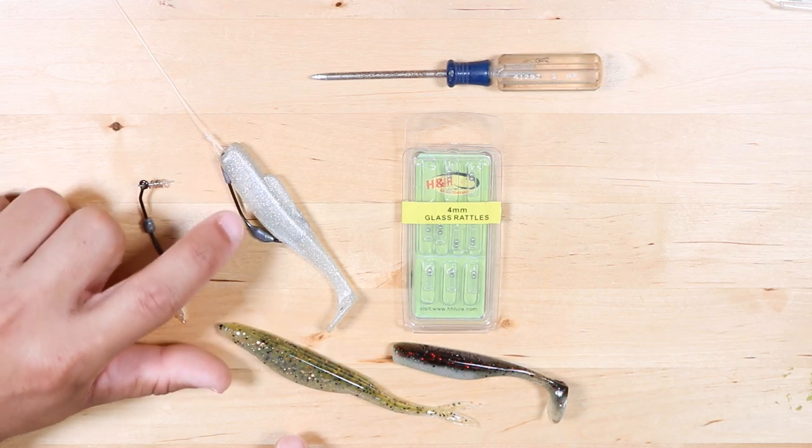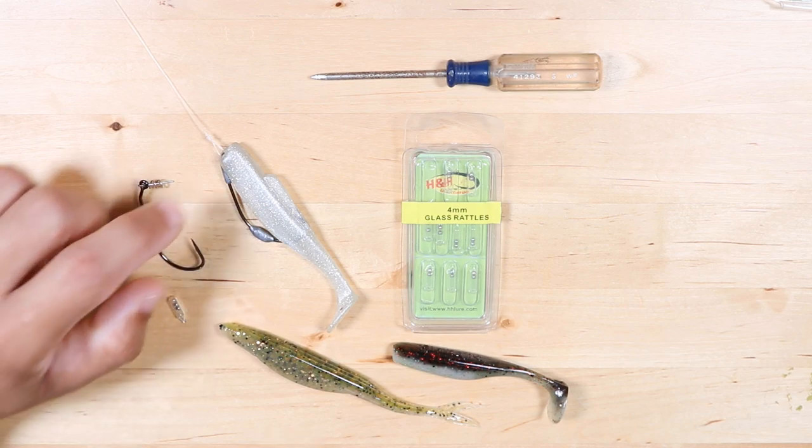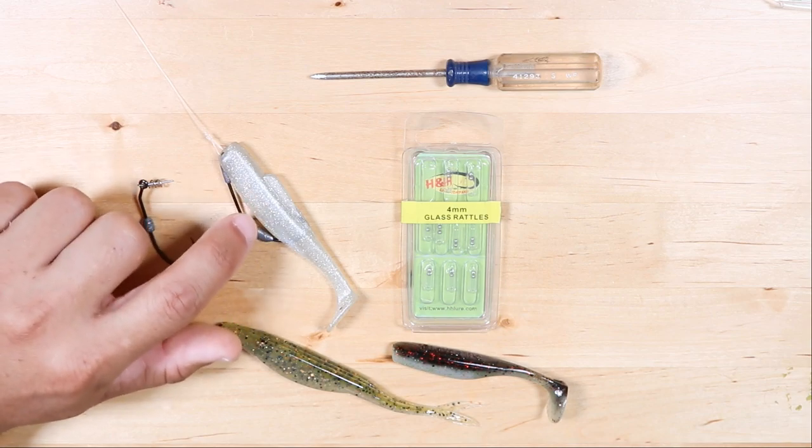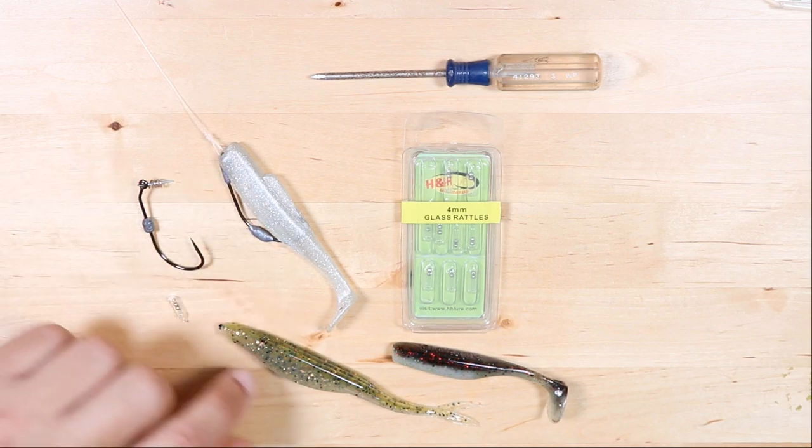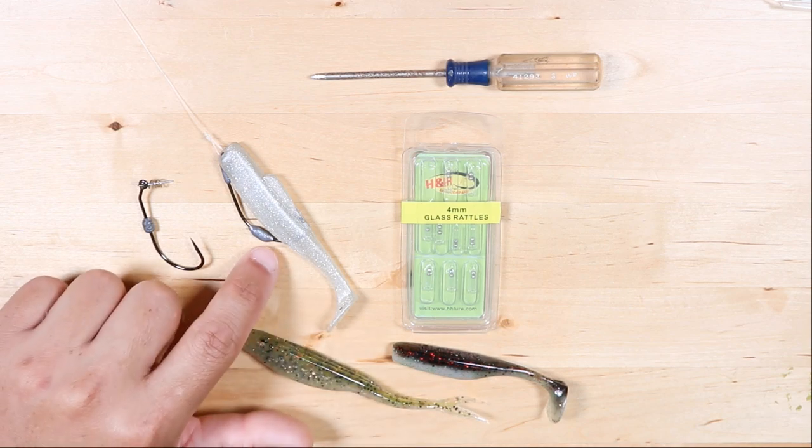I highly recommend rigging up your lure first, seeing where the hook rests, and then looking for an area that has enough meat on it that you can put the glass bead into. I typically like to put them closer to the head or near the middle of the body where there's a little bit more meat.